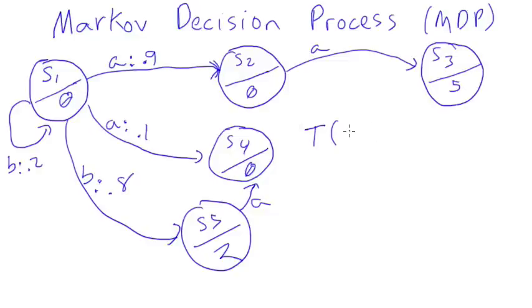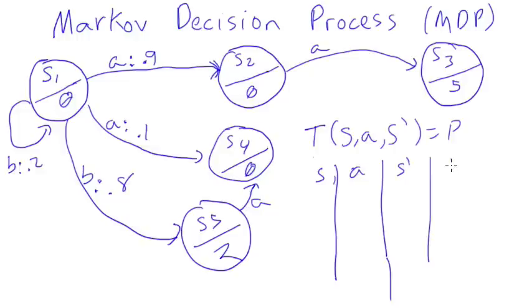We use a transition function. So we say T of S, A, S prime is some probability. So that is a transition function. Basically, it's just a table of S, A, another S, and then the P. Let me just do a couple of these. So if you are in state S1, and we take action A, then with probability 0.9, we end up at S2. If we are in S1, we take action A, probability 0.1 we're going to end up at S4.